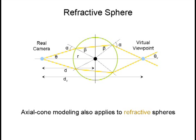Here we show how the captured photo of multiple spherical mirrors is modeled as axial cone cameras. The axial cone modeling can also be used to model a refractive sphere. The locations and cone angle of virtual cameras differ from the mirror case.